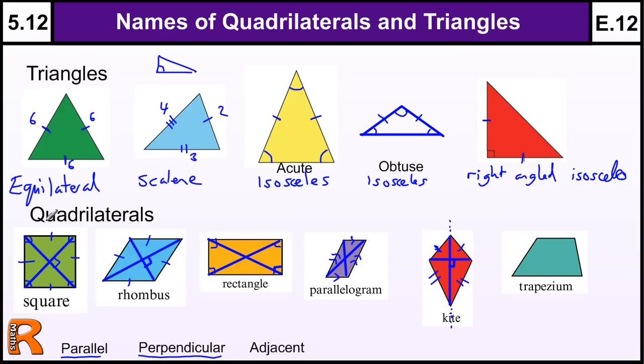Things like squares. A square has one, two, three, four lines of symmetry. A rhombus, one, two lines of symmetry. A rectangle has one, two lines, but not diagonals. Parallelograms have no lines of symmetry.